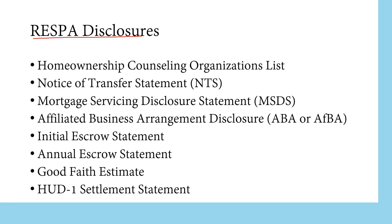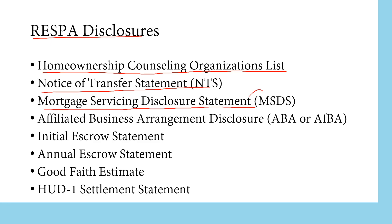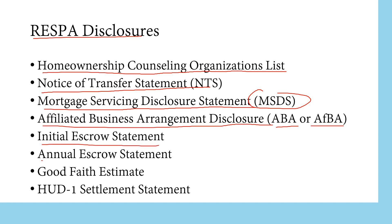Let's talk about RESPA disclosures. There are several you need to know about: the Home Ownership Counseling Organizations List Disclosure, the Notice of Transfer Statement, the Mortgage Servicing Disclosure Statement (MSDS), the Affiliated Business Arrangement Disclosure (ABA/AFBA), the Initial Escrow Statement, the Annual Escrow Statement, the Good Faith Estimate, and the HUD-1 Settlement Statement.